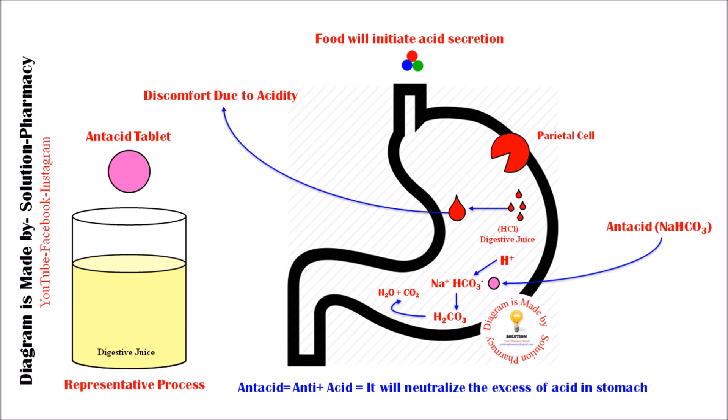By neutralizing the already-secreted acid, antacids relieve the discomfort caused by acidity, such as heartburn, acid reflux, and indigestion. Now let's understand in detail through PowerPoint animation the mechanism of antacids — how they work in our body to neutralize stomach acid.